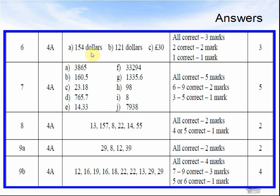Question 6: A was $154. B was $121. And C was £30. Question 7: A was $3,865. B was $160.50. C was 23.18. D was 765.7. E was 14.33. F was 33,294.